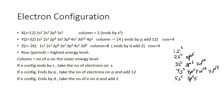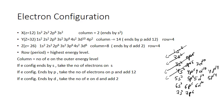The filling order follows the Aufbau diagram: 1s2, 2s2, 2p6, 3s2, 3p6, 4s2, 3d10, 4p6, 5s2, 4d10, 5p6, 6s2, 4f14, 5d10, 6p6, 7s2, 5f14, 6d10, 7p6. This is the correct electron configuration filling order.